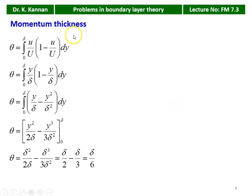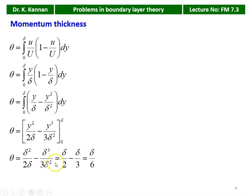Momentum thickness θ is defined by the integral from 0 to δ of (u/U)(1 − u/U) dy. Substituting u/U = y/δ: integral from 0 to δ of (y/δ)(1 − y/δ) dy = integral of (y/δ − y²/δ²) dy. Integrating: θ = y²/(2δ) − y³/(3δ²), evaluated from 0 to δ, giving δ/2 − δ/3 = δ/6. The momentum thickness θ = δ/6.